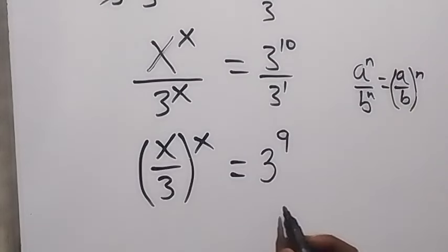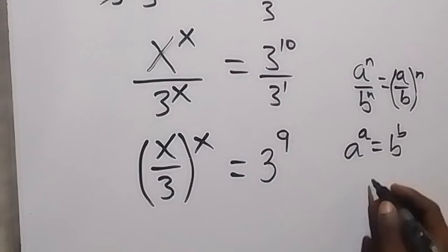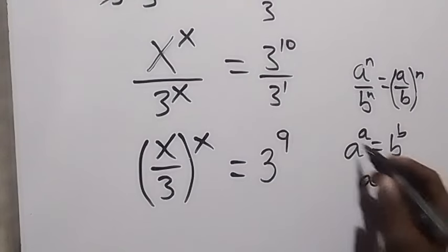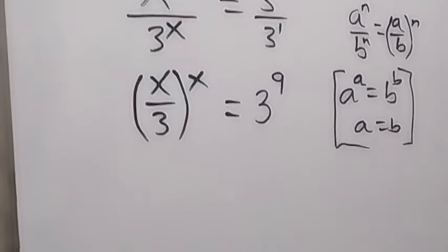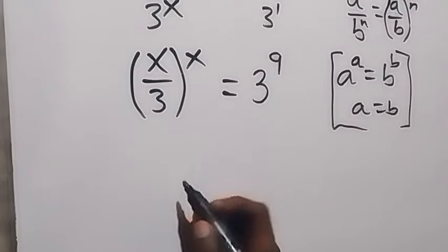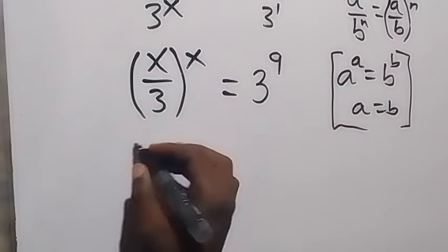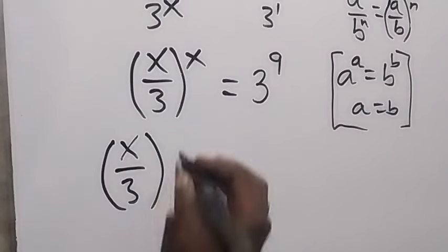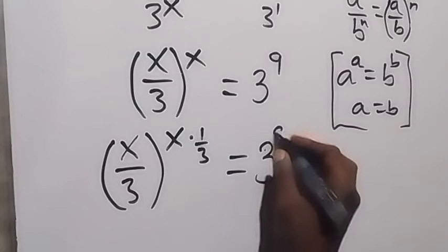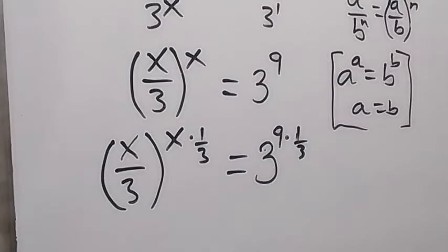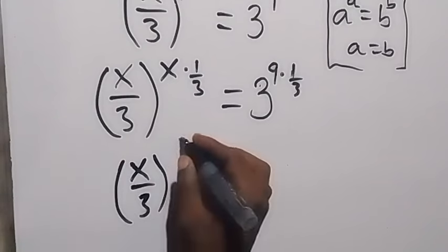Now what we have here we want to make it in the form a raised to power a equals b raised to power b, and once we have that form we know that a equals b. So let's work our way to this format. We multiply both sides' powers by 1 over 3, so this becomes (x over 3) raised to power x times 1 over 3, and on the right side 3 raised to power 9 times 1 over 3. This gives us (x over 3) to the power of (x over 3).